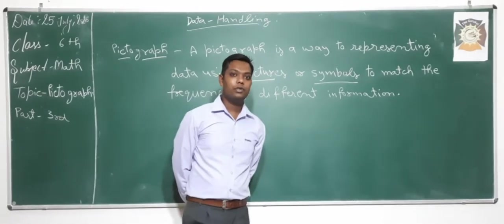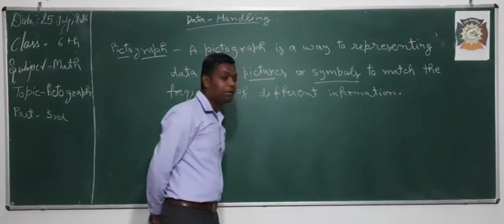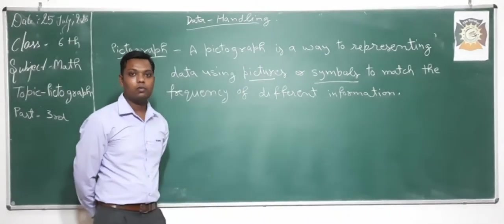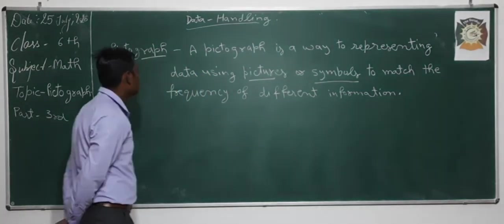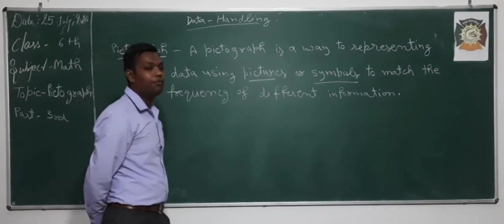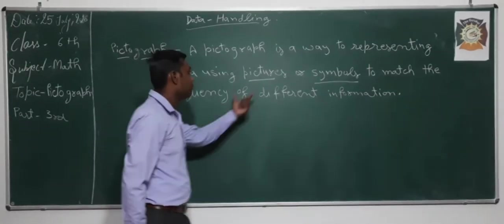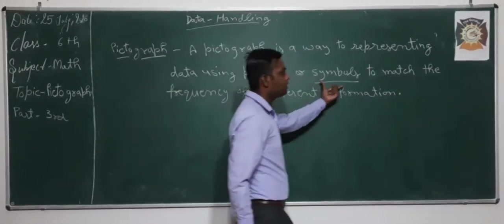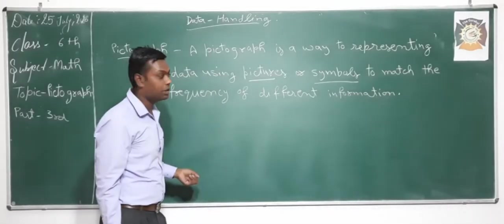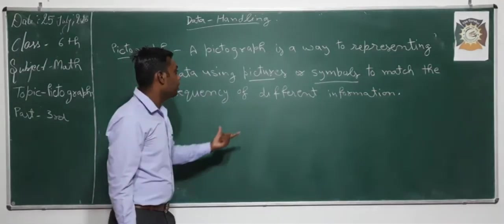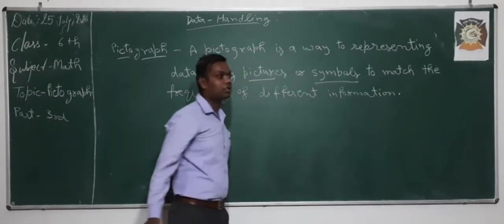In this method we use symbols and pictures to represent the data or to match the frequency. You may write the definition as: a pictogram is a way to represent data using pictures and symbols to match the frequency of different information. You have to focus on two words — pictures and symbols.